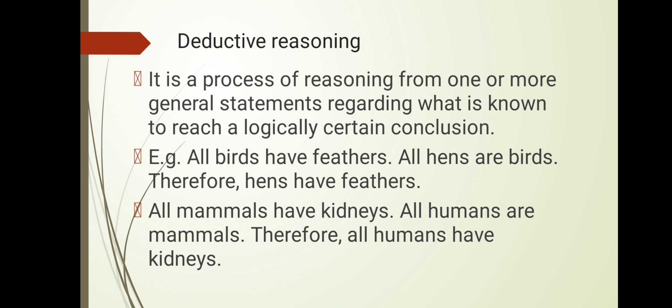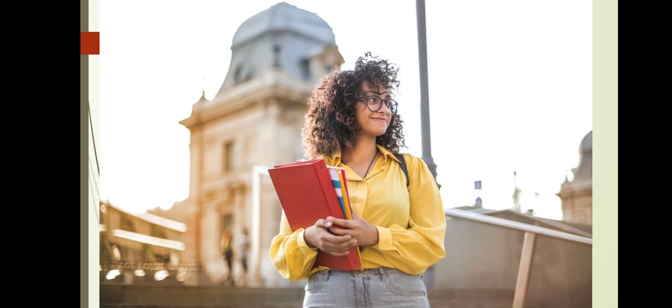In deductive reasoning, we go from general to specific. For example: all psychology students are very brilliant. If Lena is a psychology student, then we can conclude that Lena is also very brilliant. That is the exact form of deductive reasoning — general statement to a specific conclusion.